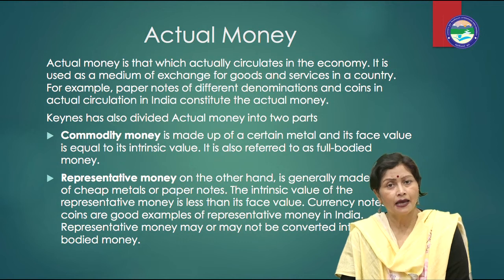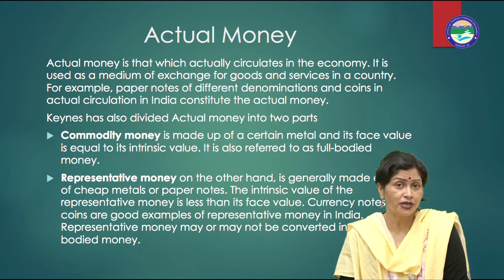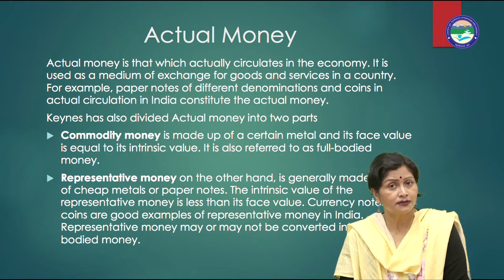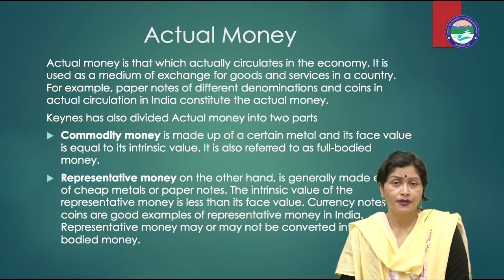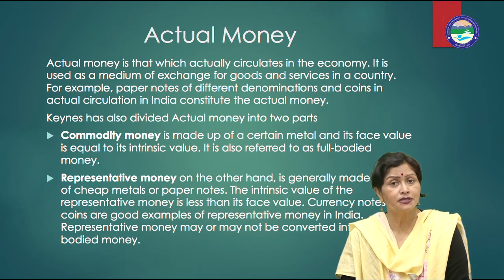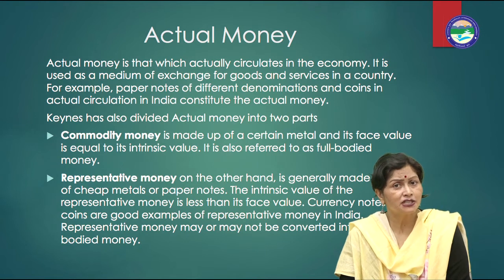Number two is commodity money and representative money. Commodity money is made up of certain metals and its face value is equal to its intrinsic value. It is also referred to as full-bodied money. Representative money, on the other hand, is generally made either of cheap metals or paper notes. The intrinsic value of representative money is less than its face value. Currency notes and coins are good examples of representative money in India. Representative money may or may not be converted into full-bodied money.